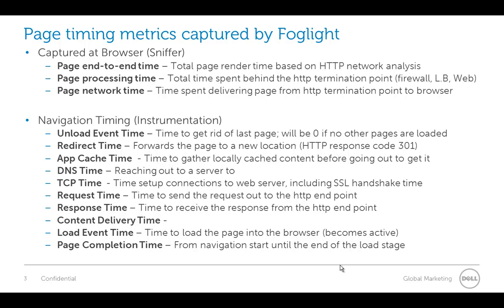If we look specifically at the page timing metrics captured by Foglight, we have two sets. We have information captured at the browser using a sniffer, and also captured by navigation timing using instrumentation that we insert into the page. Captured at the browser, we're going to get the end-to-end time, the processing time, and the network time.